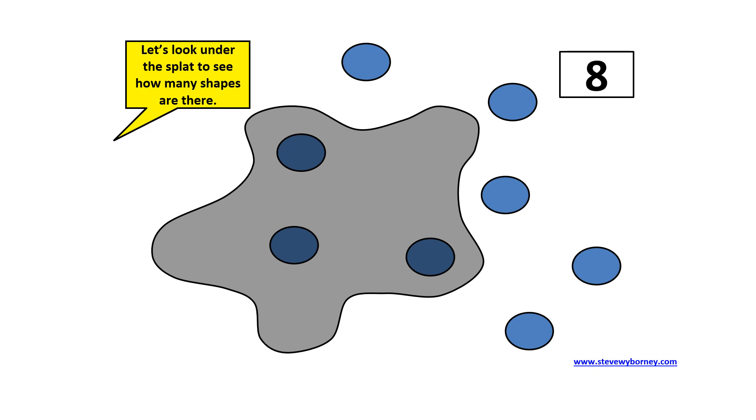Let's talk about some of the strategies you might have used. Maybe you saw the five and you counted on six, seven, eight. Or maybe you know your doubles and you saw four blue shapes and you knew four and four make eight. But you already had one of the other sets of four which meant three had to be hiding under the splat. Or maybe you just subtracted eight minus the five that you could see and you knew that there were three hiding. Kind of using that think addition strategy. Thinking five and some more equals eight. Did you have a different strategy? Go ahead and share it now.